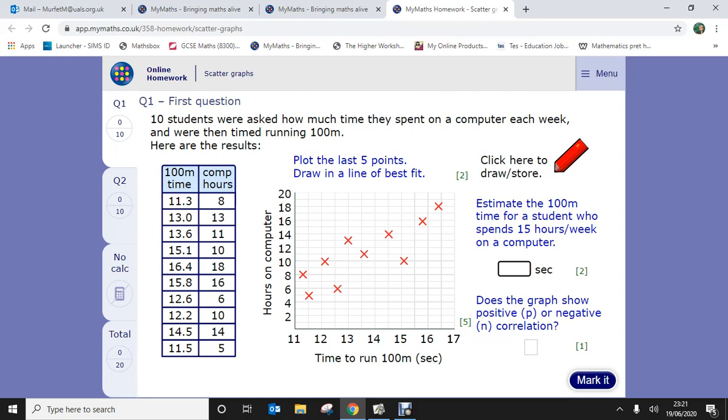Now because we've got that particular format, we've plotted the five points. We're now going to look to click to draw or store the line. So again, we're going to click on the very first and we'll draw the line somewhere in there.